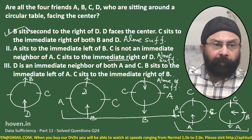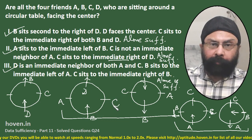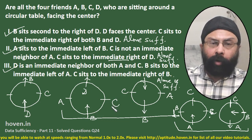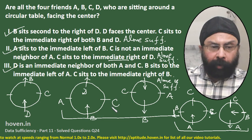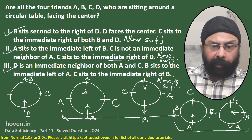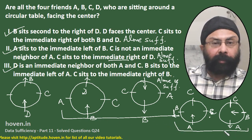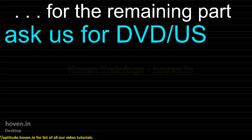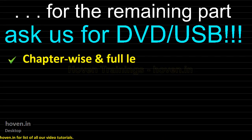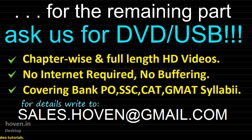So all three statements — Statement 1 alone, Statement 2 alone, and Statement 3 alone — are each individually sufficient to help us determine that all four friends are not facing the center. This problem is very important; you should review the video to see how it was solved.